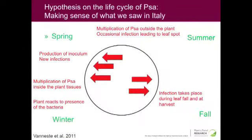When we transform all of this into when infection occurs, we find that infection occurs in two periods of the year: spring and early summer, and during autumn. When we compared that with what was happening in Italy, we had a pretty good match.